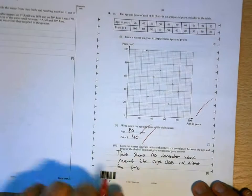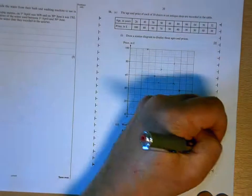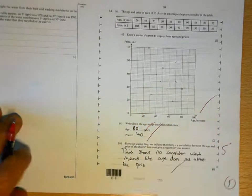The scatter is good. Eighty-forty. This shows no correlation, which means the age does not affect the price. Beautifully described. Five marks.